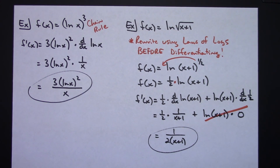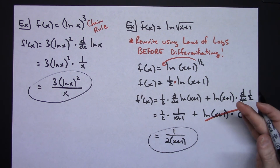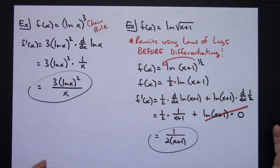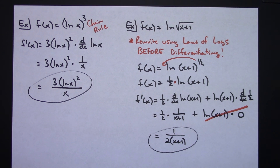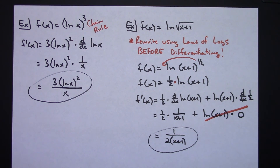So there are about four examples using derivatives of logarithms, implementing them alongside all other derivative rules you might know — such as chain rule, quotient rule, and product rule. All of those other derivative rules still apply; this was just introducing the new derivative of a logarithm.